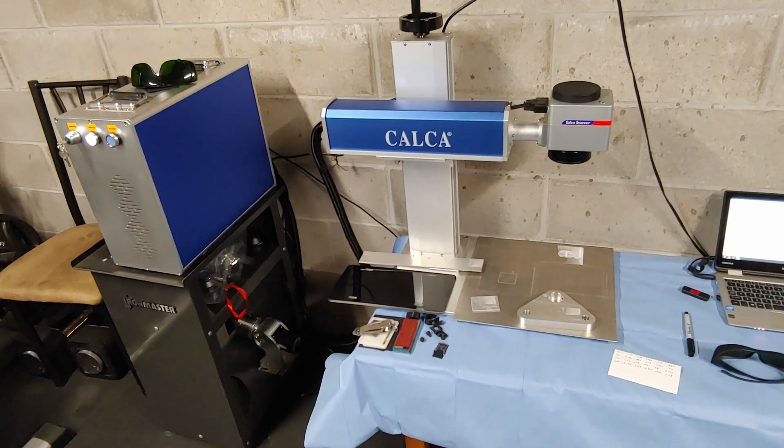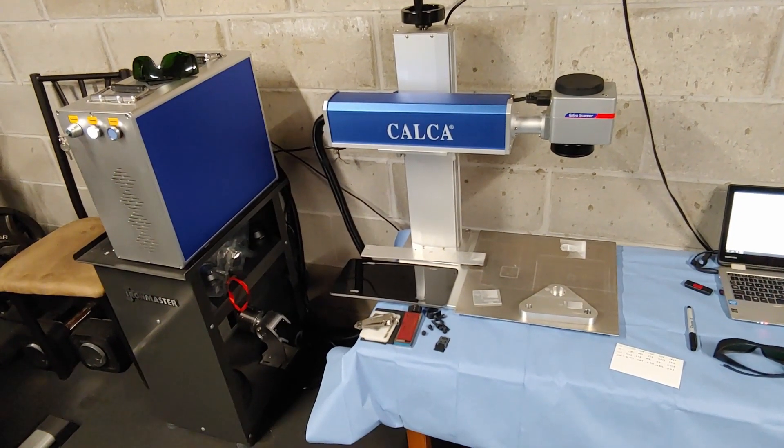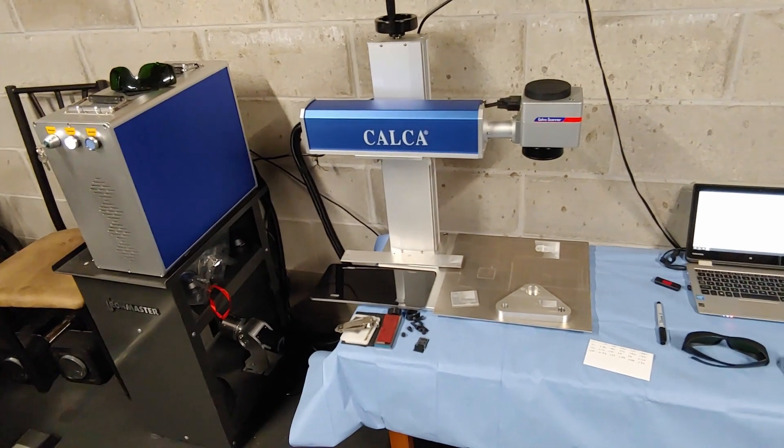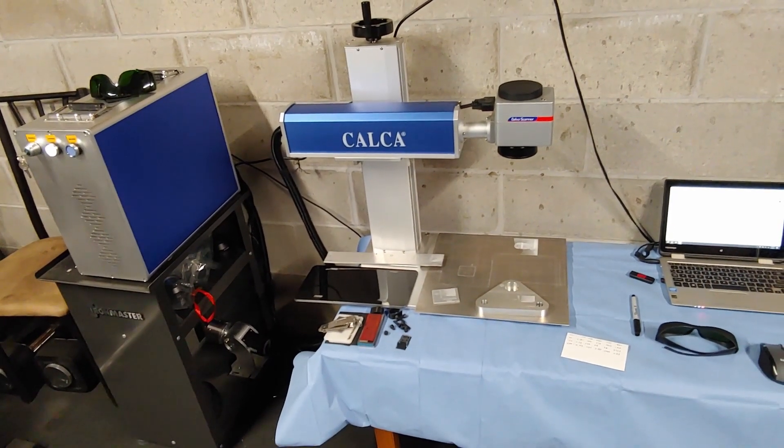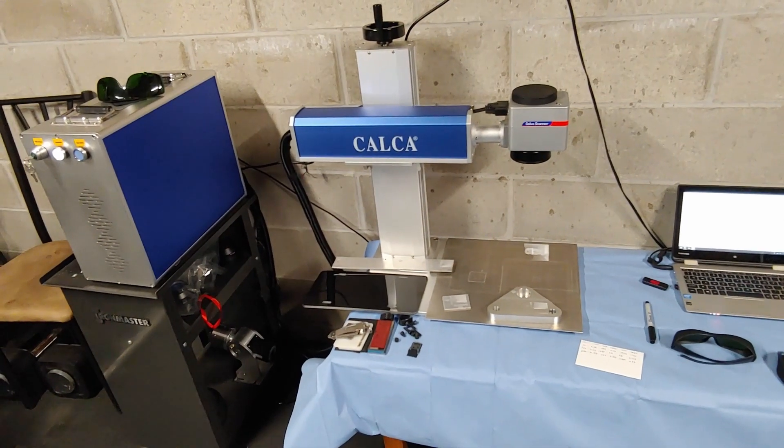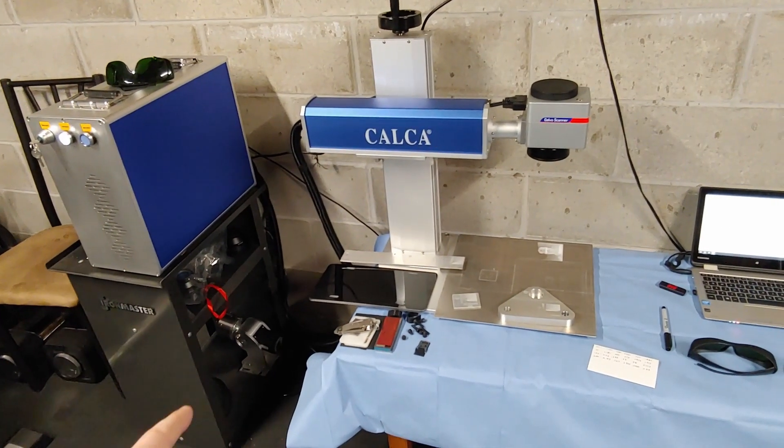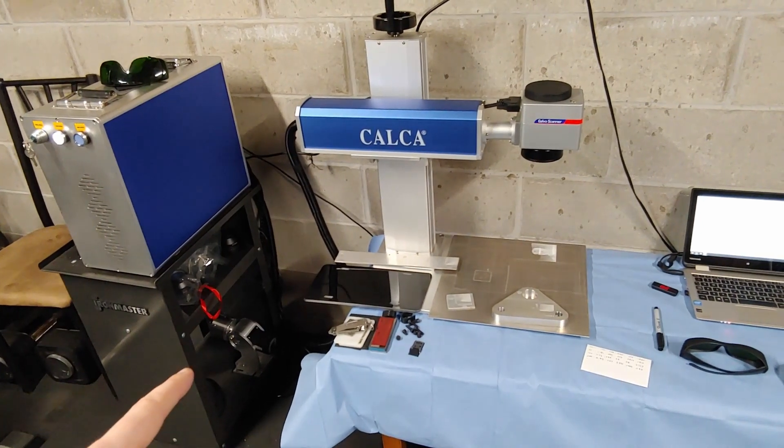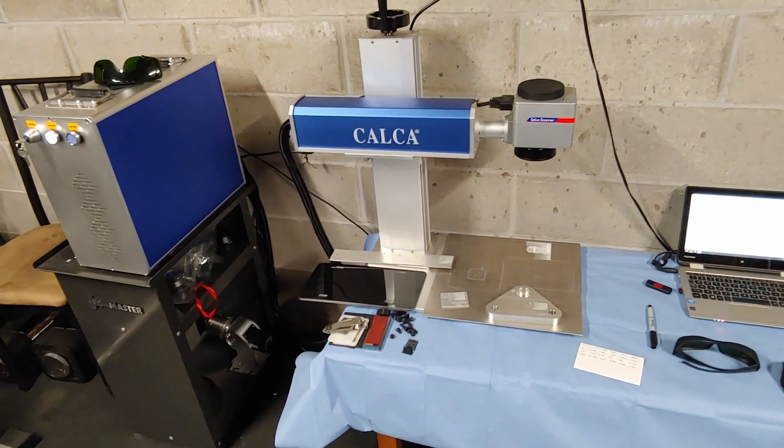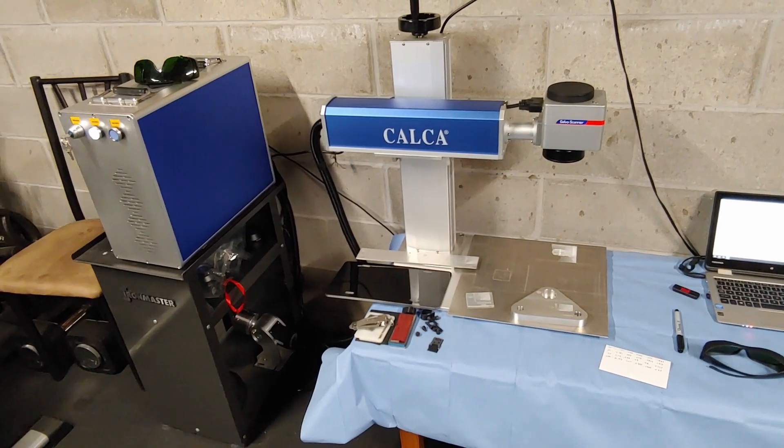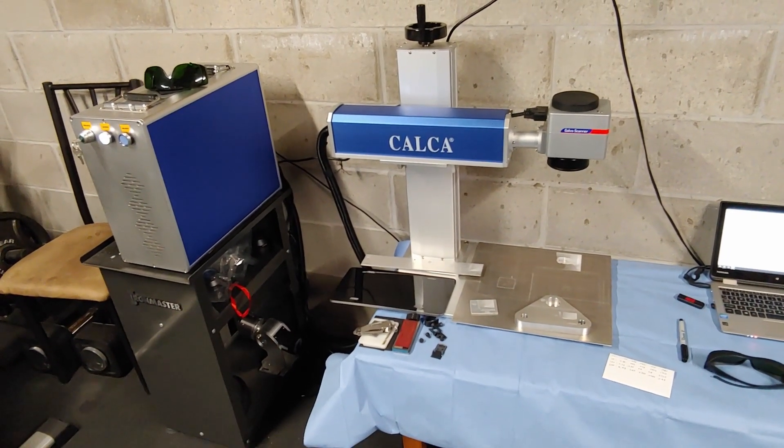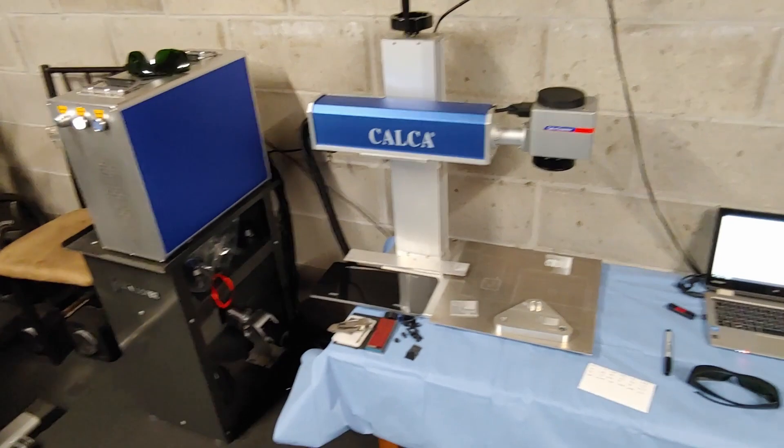I debated a hundred watt, but the price difference - I haven't said it on camera, but this whole package cost me about $7,500 after shipping, tax, the extra lenses. I do have a rotary down there that I haven't really played with yet. A hundred watt is about 15 to 17,000 dollars, and that price jump just for me isn't worth it.